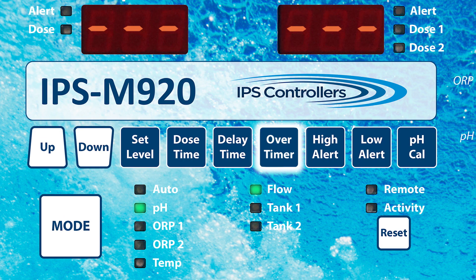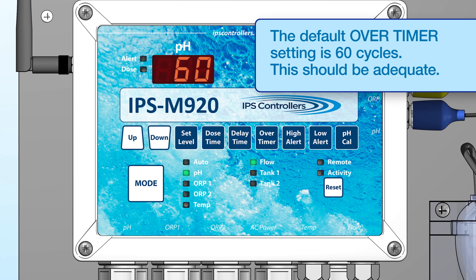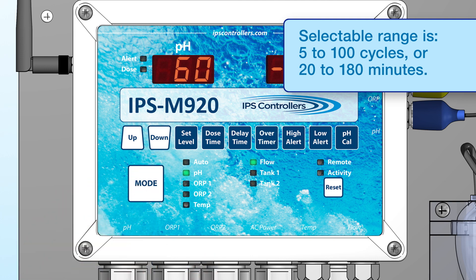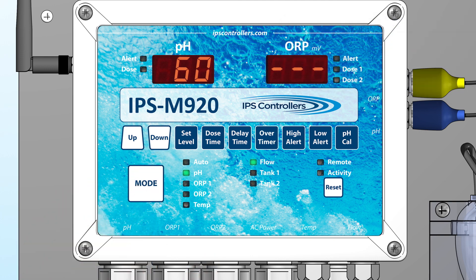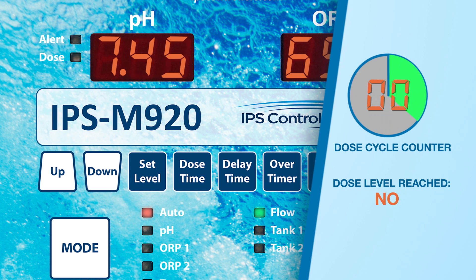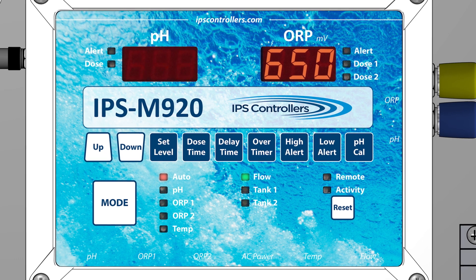The Over Timer is a safety mechanism. Press the Over Timer button to display the current settings; the default setting is 60 cycles. The Over Timer counts the number of cycles that the controller is allowed to dose and delay in order to reach the pH and ORP set levels. If the controller reaches the set levels, the Over Timer resets and normal operation continues. If the set levels are not reached in your chosen number of cycles, the timer will de-energize the chemical relays, and the digital readouts for the pH or ORP will start flashing. The Over Timer will prevent the controller from running any more cycles until the entire system has been reset.